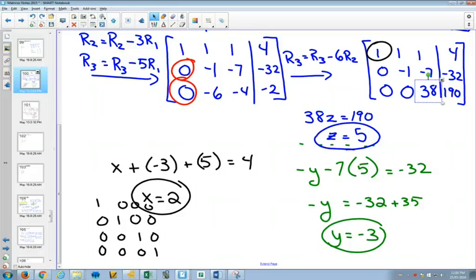Then secondly, you can take the second equation. Now that you know z is 5, you can go negative y minus 7 times 5 is negative 32. And you can find out that y is equal to negative 3. And finally, you can plug those all back into your first equation, 1, 1, 1, 4, and find out that x is equal to 2.